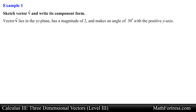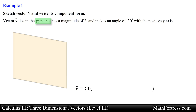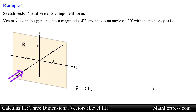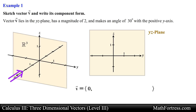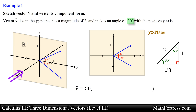Since this vector lies on a plane it will have one component equal to 0 — in this case the x component will be equal to 0. Now to determine the value of the other components we can use right triangle trigonometry to find the y and z components. According to the problem, vector v makes an angle of 30 degrees with the positive y axis. This means it can form two separate angles: positive 30 degrees and negative 30 degrees, so we have two solutions that satisfy the conditions of the problem.